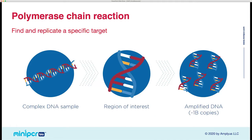Also key to the labs we're going to be talking about today is polymerase chain reaction or PCR. PCR is an important tool to find and replicate a specific target in a complex DNA sample, and it can also be a super useful diagnostic tool. Among the most widely used COVID tests is the PCR test. When we do a PCR test, we're trying to detect the presence or absence of a specific piece of genetic material — in the case of COVID-19, we're looking for the presence of the coronavirus genome.